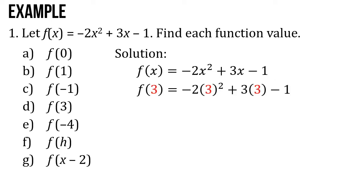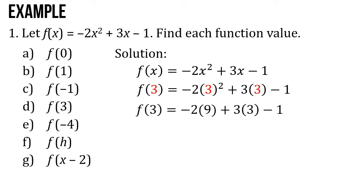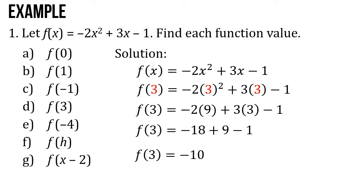What if the value of x is 3? f of 3 equals negative 2 times 3 squared plus 3 times 3 minus 1. f of 3 equals negative 2 times 9 plus 3 times 3 minus 1. f of 3 equals negative 18 plus 9 minus 1. So f of 3 equals negative 10.